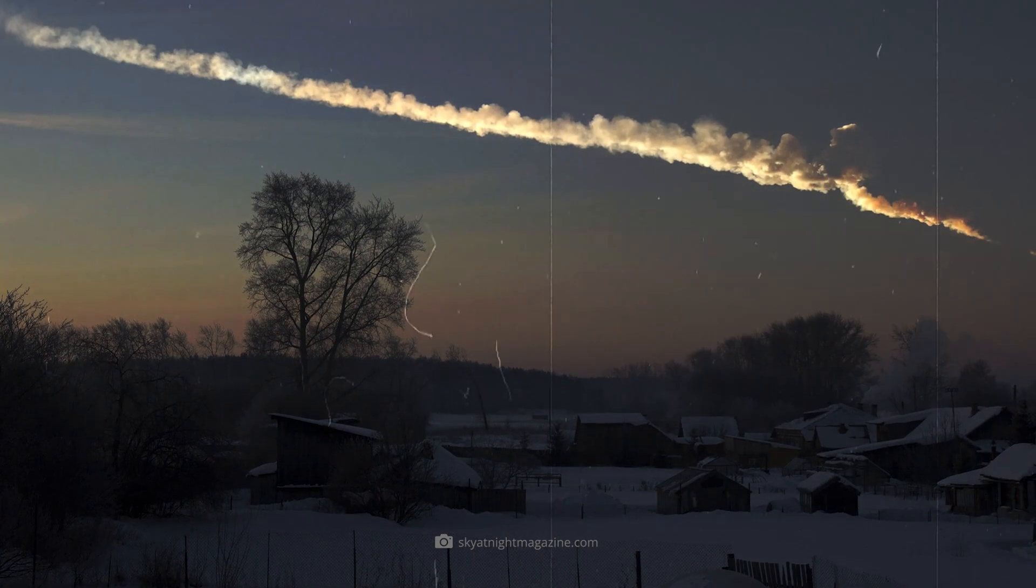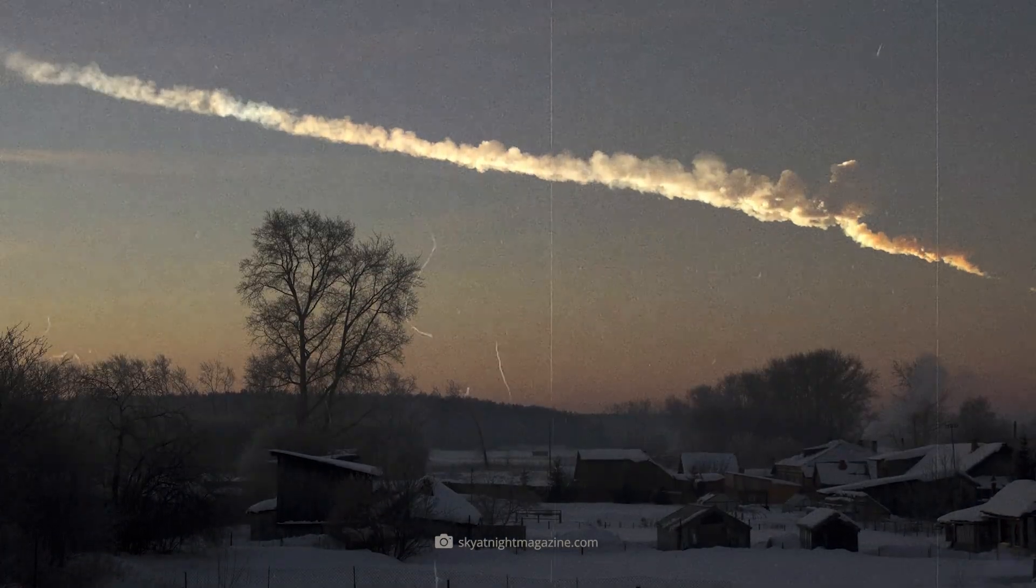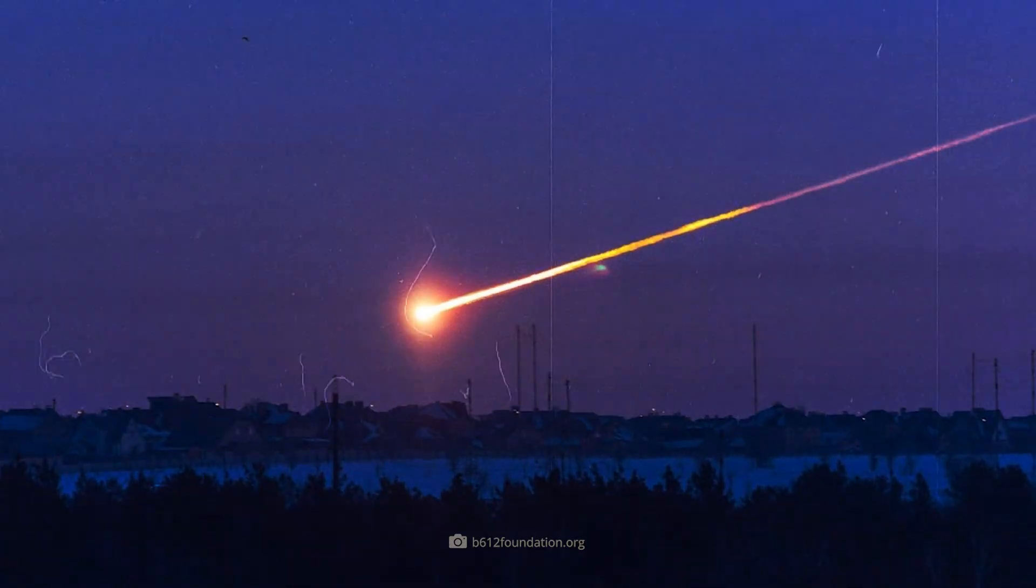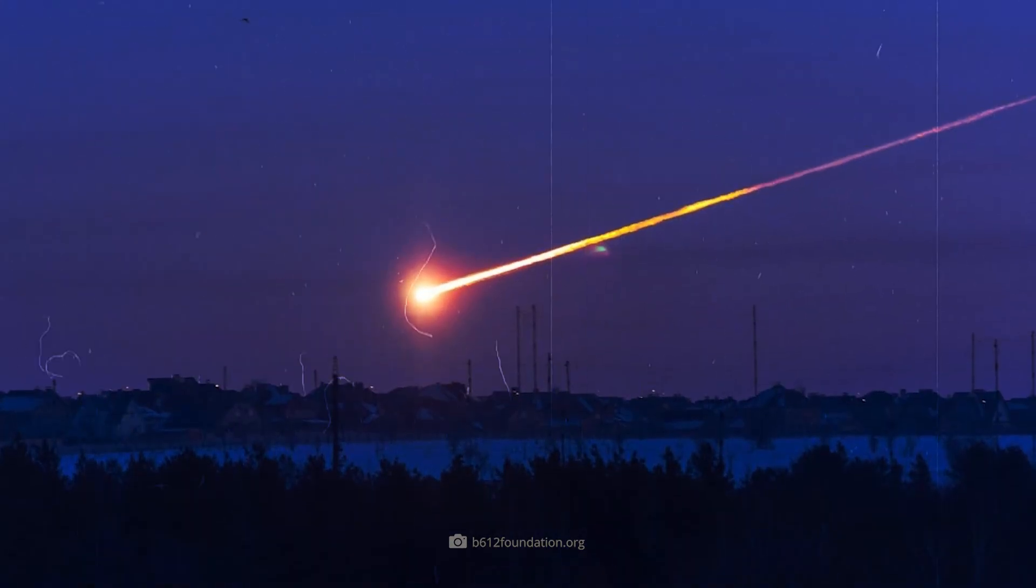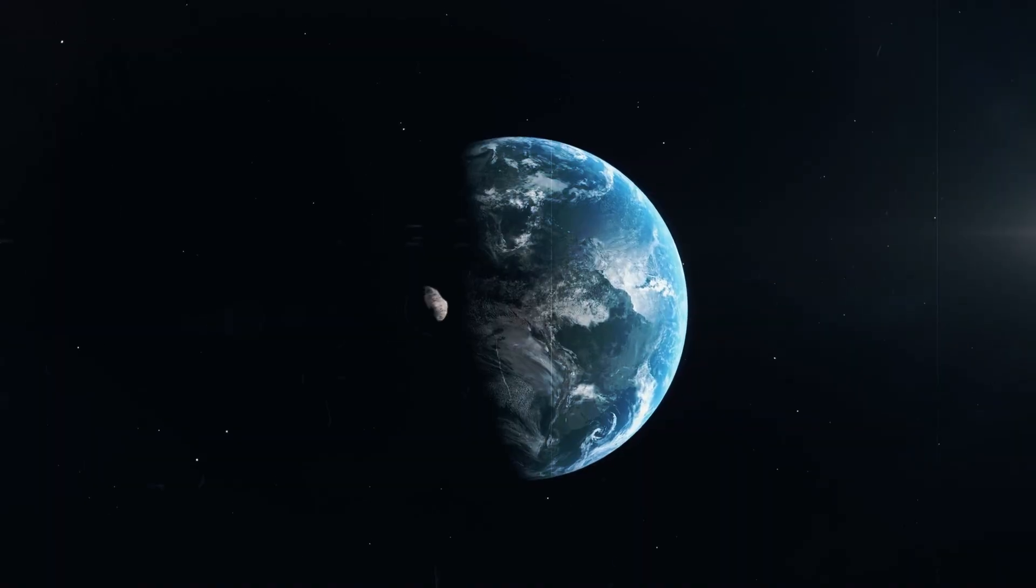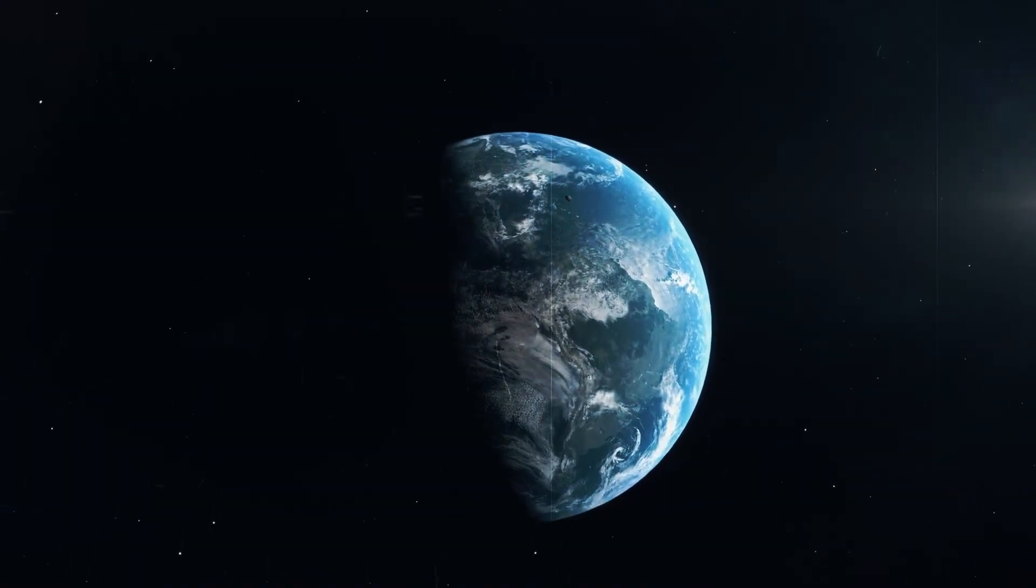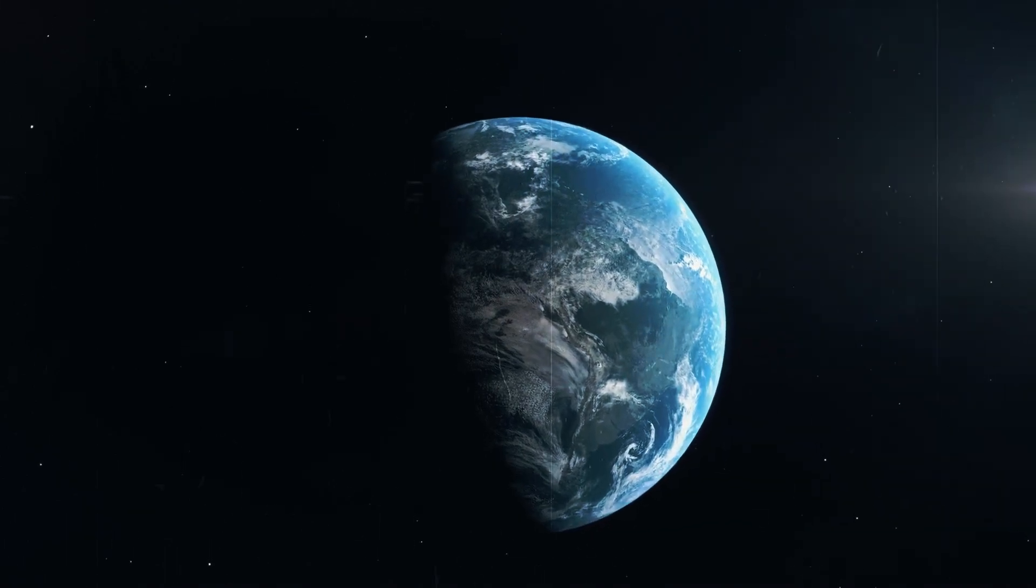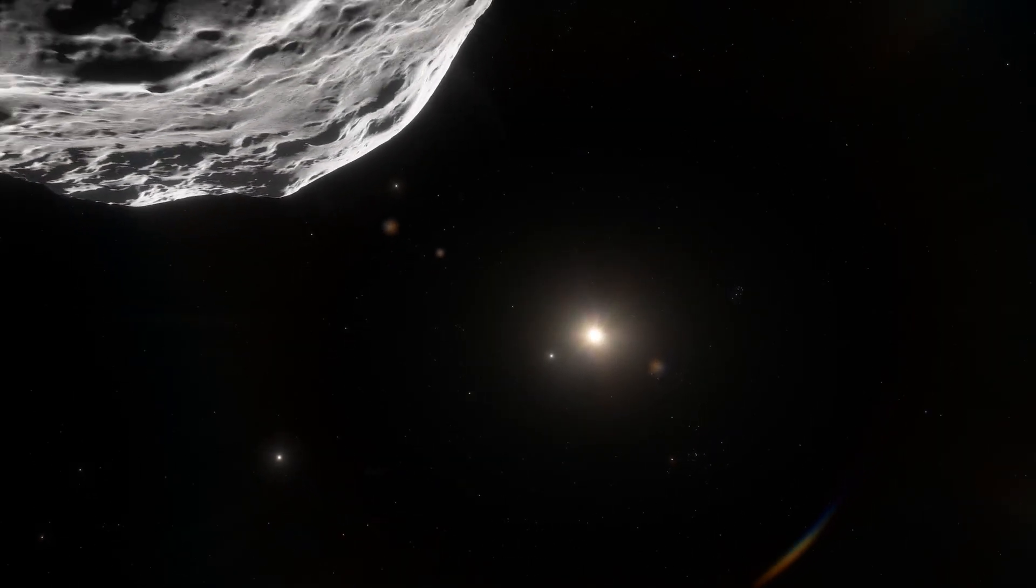Another well-known event is the Chelyabinsk meteor in 2013, which did not hit the Earth but exploded in the Russian city of Chelyabinsk. The shockwave shattered windows and injured about 1,500 people. This event showed that even smaller celestial bodies that hit the Earth at high speed can cause significant damage. Comet impacts are rare, but the potential consequences are catastrophic.